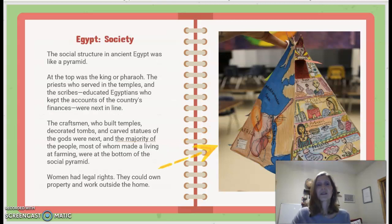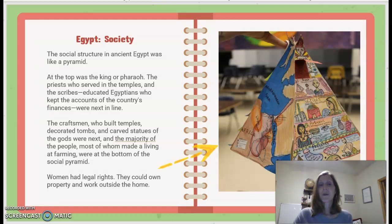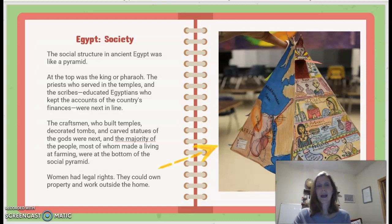Egypt Society: The social structure in ancient Egypt was like a pyramid. At the top was the king or pharaoh, followed by priests who served in the temples and scribes. Educated Egyptians who kept the country's financial accounts were next, then craftsmen who built temples, decorated tombs, and carved statues. The majority of people, most of whom made a living at farming, were at the bottom of the social pyramid. Women had legal rights — they could own property and work outside of the home.